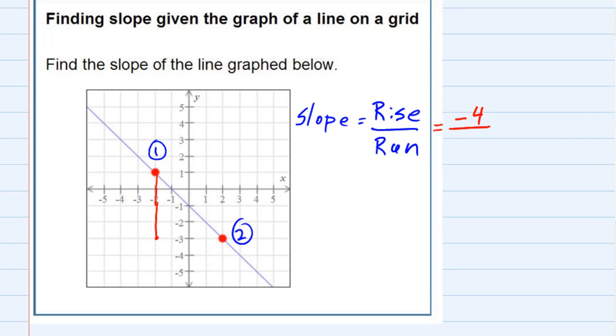The run would be the left-right portion, which is one, two, three, four. That's a positive four. So my rise was negative four, negative because it was down, and my run was a positive four, positive because it was to the right.